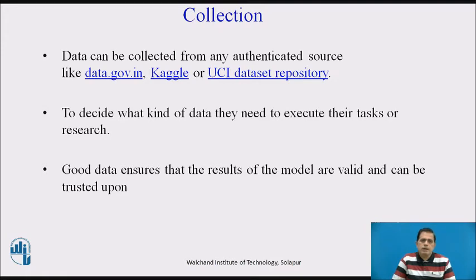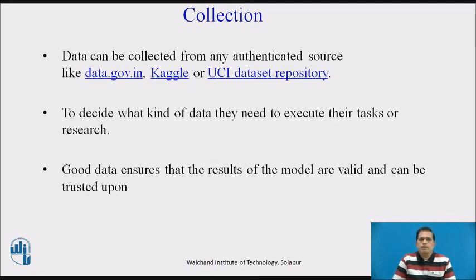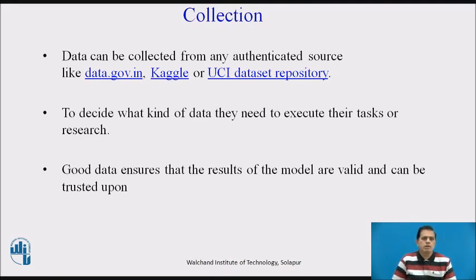After that, we collect data in different authenticated forms. Authenticated data can be collected from sources like data.gov.in, Kaggle, or the UCI dataset repository. We must decide what kind of data we need to execute the task or carry out the research, because good data ensures that the results of the model are valid and can be trusted.